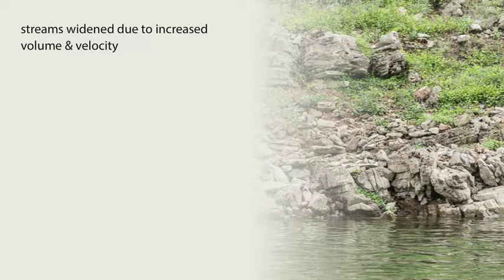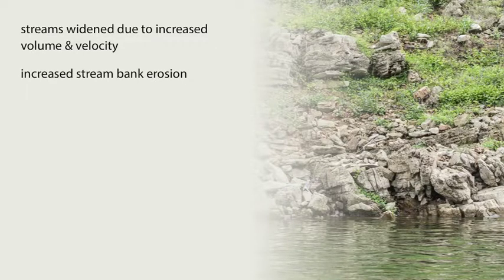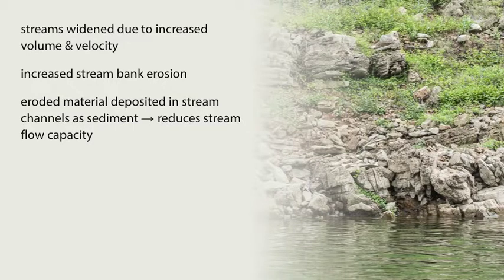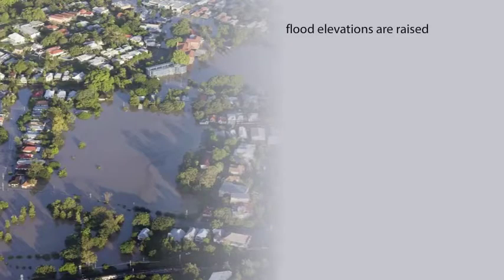Stream geometry also changes. Streams are widened due to increased volume and velocity, which results in increased stream bank erosion. Usually the stream bank is undercut, destabilizing vegetation, and in turn exacerbating the erosion problem. Eroded material is deposited in stream channels as sediment, which reduces stream flow capacity. Flood elevations are raised as noted.